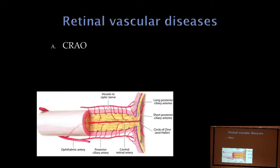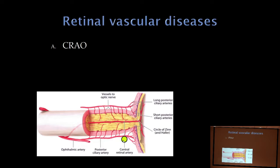Starting with conditions anterior to the chiasm — retinal vascular diseases. The ophthalmic artery is the first branch off the internal carotid artery. Off the ophthalmic artery, we have two important branches: the central retinal artery, which travels through the optic nerve to supply the retina, and the posterior ciliary arteries, which supply the optic nerve. We'll talk about the complex supply of the optic nerve head via branches off the posterior ciliary artery.